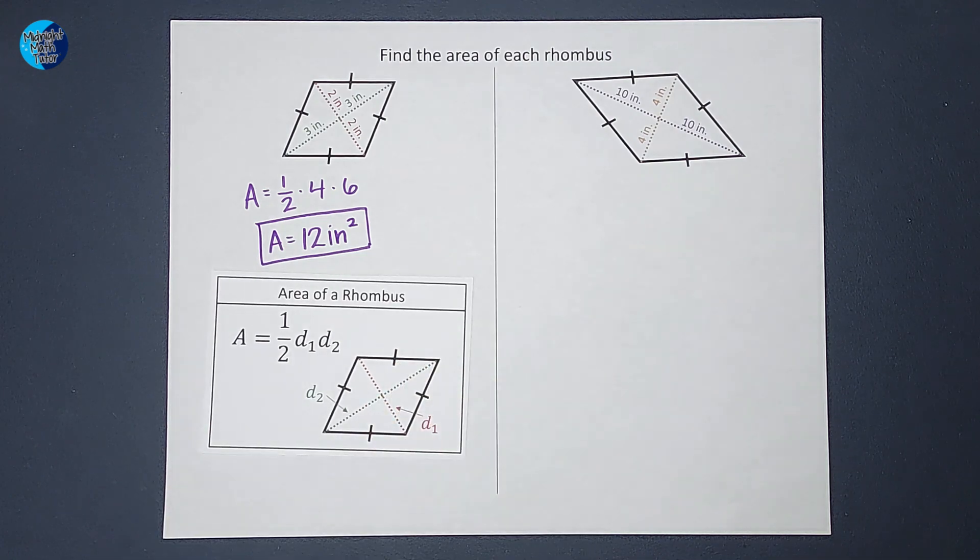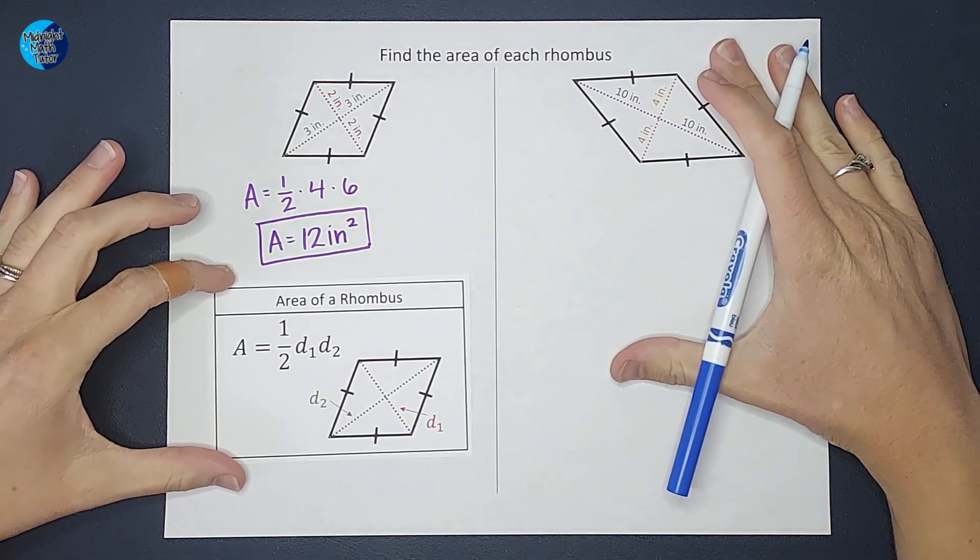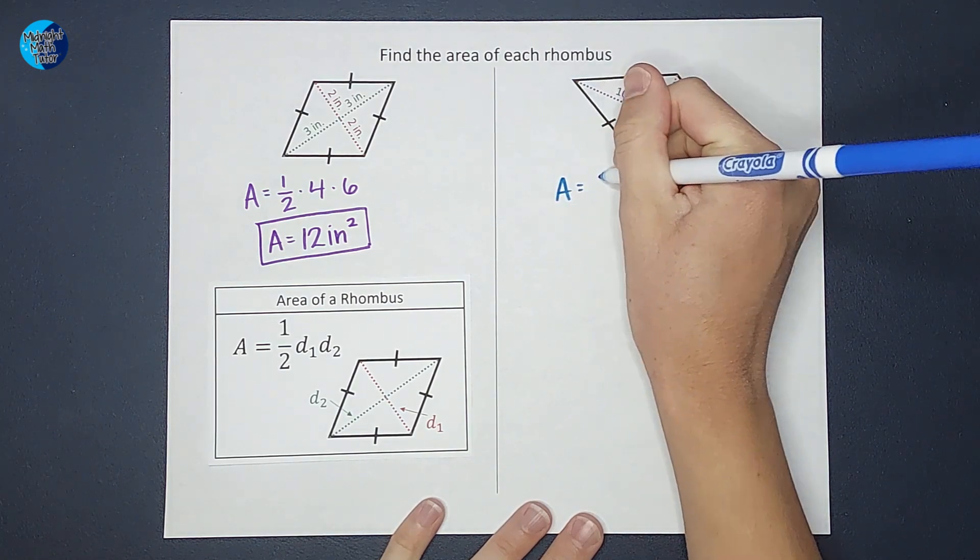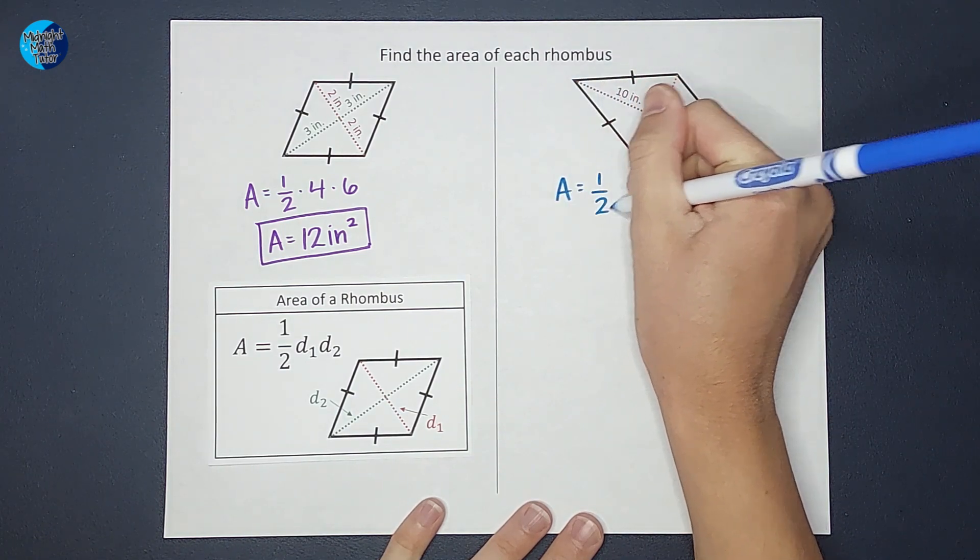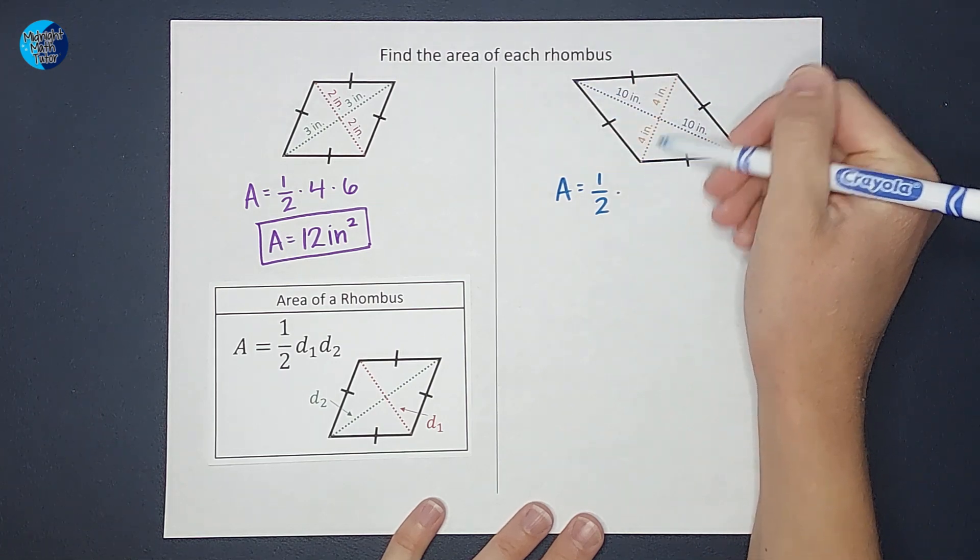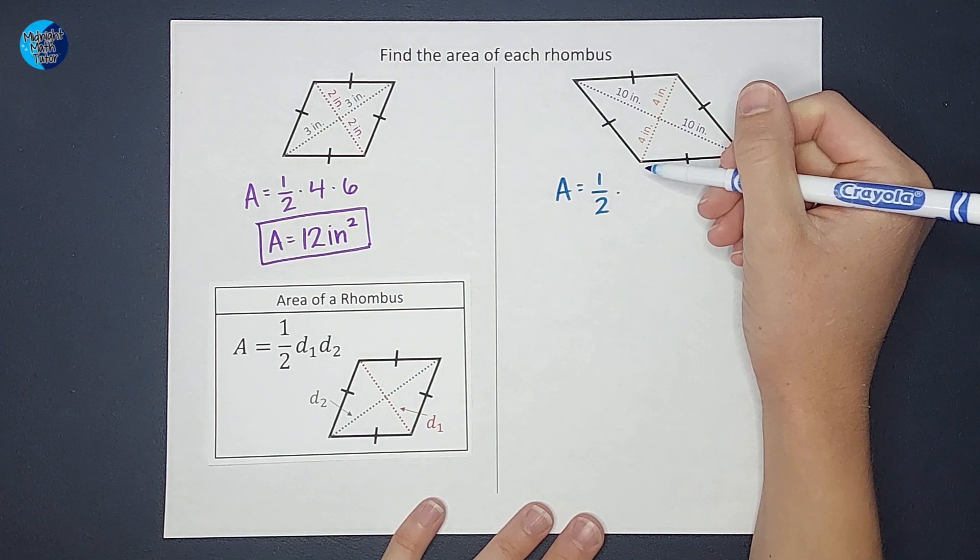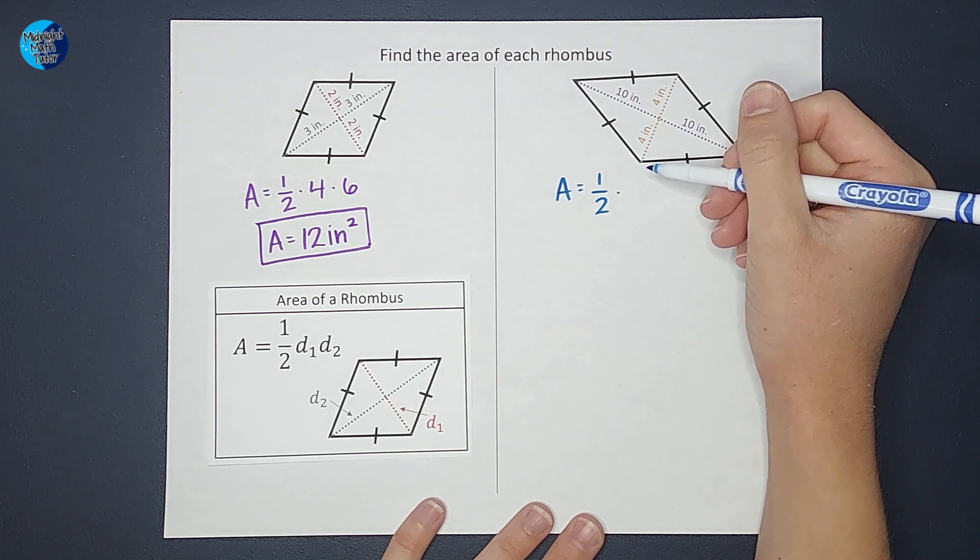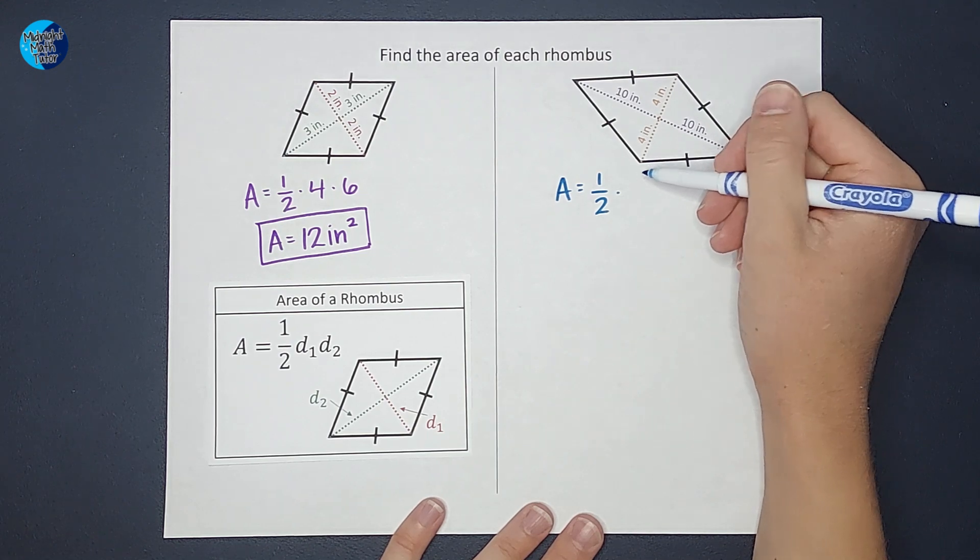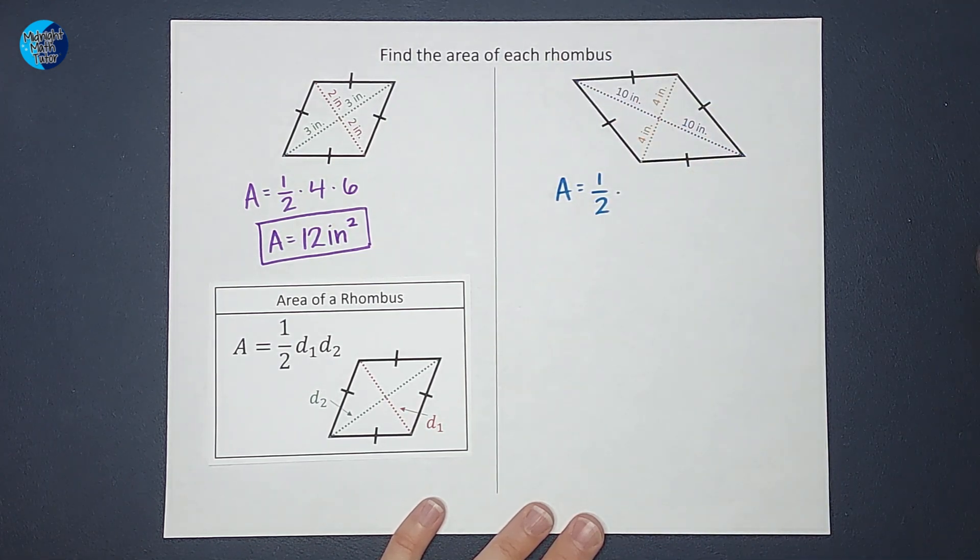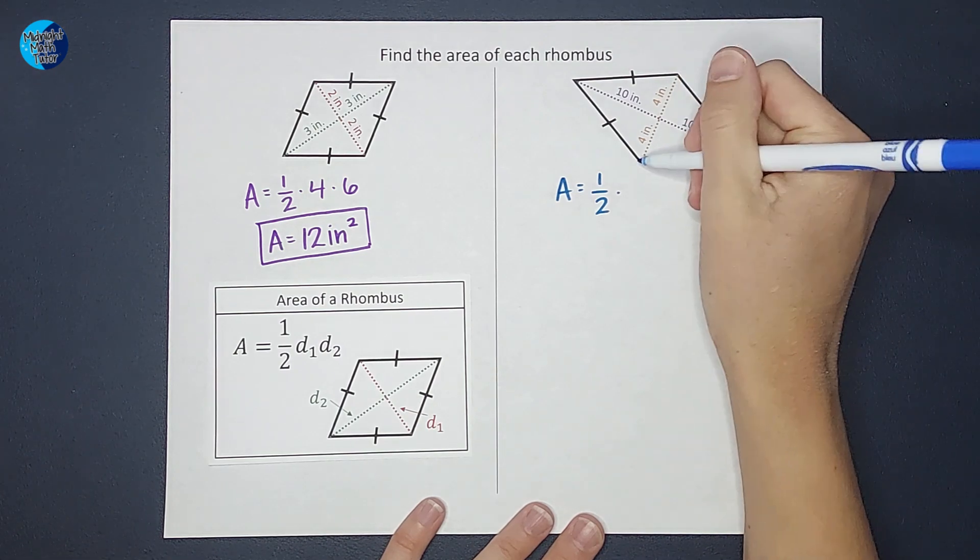Okay, let's do one more. This guy over here, we're going to do the same thing. We're going to say our area is one half times my first diagonal. Did I say diameter again? Oh my gosh, diagonal. You guys, it's a diagonal, not diameter. Okay, so it doesn't really matter which one is the first diagonal and which one is the second. Just pick one.